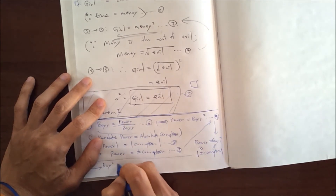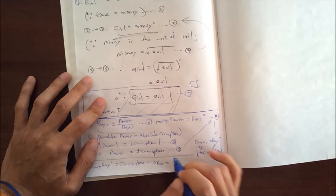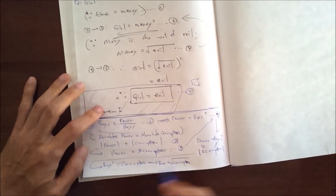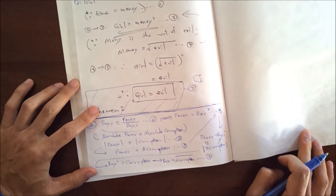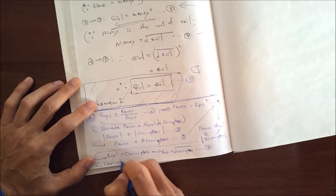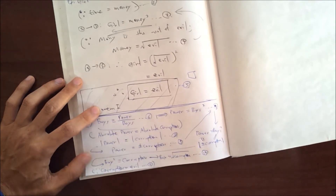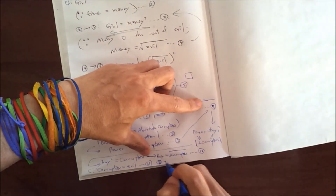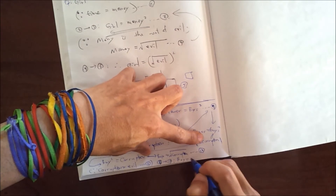That means boys squared equals corruption — let's call it equation 10. And one more fundamental assumption: corruption is evil, so corruption equals evil — equation 11. Now, plugging equation 11 into equation 10, boy equals corruption replaced by evil — so boy equals the square root of evil.